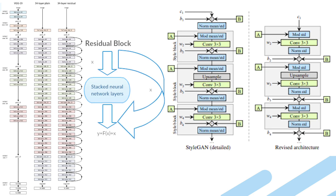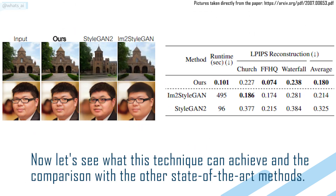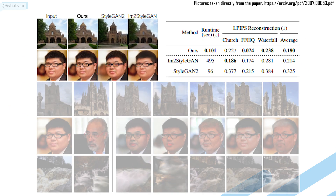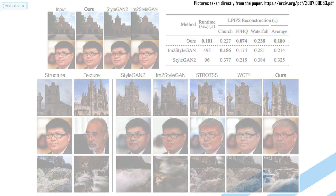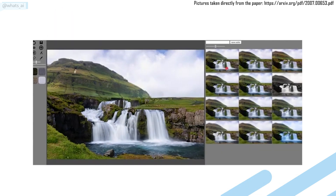This is all done using both ResNet's architecture and a StyleGAN2 design, both of which are linked in the description for more information. As you can see, this method reconstructs images much faster than generative models can, with much more realistic and impressive results. Just take a minute to look at these amazing results.